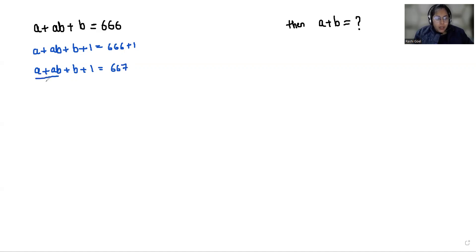Now I'm taking A as common so what is left? 1 plus B, and if I'm taking 1 common, B plus 1 equals 667. So if I take B plus 1 as common so what is left? A plus 1 equals 667.